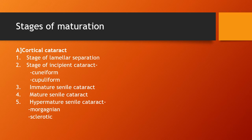Coming to the stages of maturation — in cortical cataract, there are five stages. First is the stage of lamellar separation. Second is the stage of incipient cataract, which can be of two types: cuneiform and cupuliform. Third is the immature senile cataract. Fourth is the mature senile cataract. And fifth is the hypermature senile cataract, which again can be of two types: Morgagnian and sclerotic.